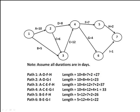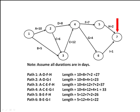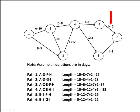Now let's look at the longest path — it's path 3. It follows nodes 1, 2, 3, 4, 5, and then 7. The work activities are A, C, E, F, and H. Adding all the durations of these activities, the duration of this path is 37 days.